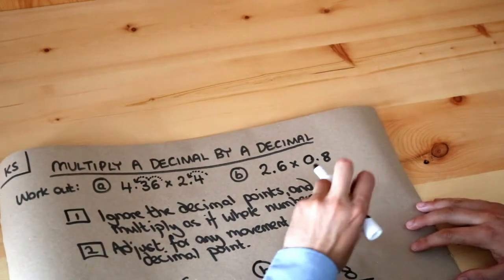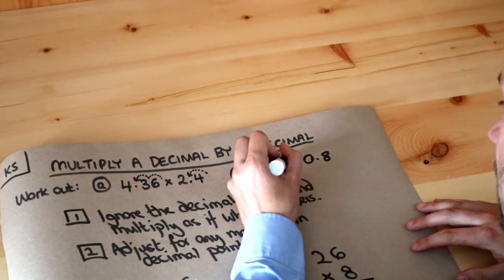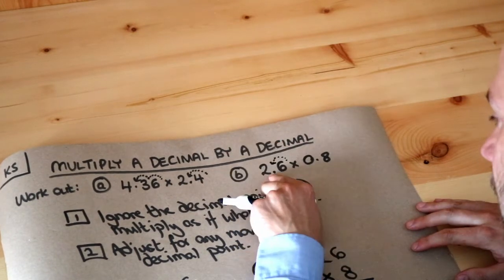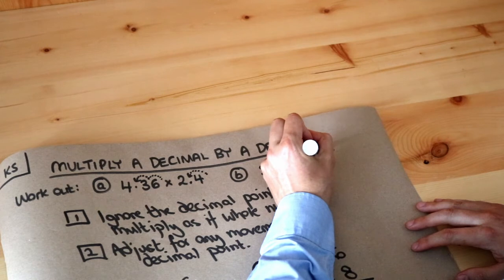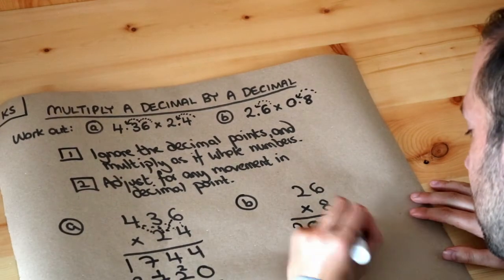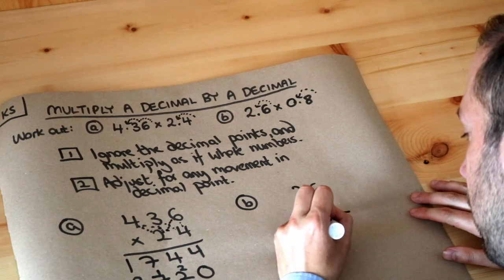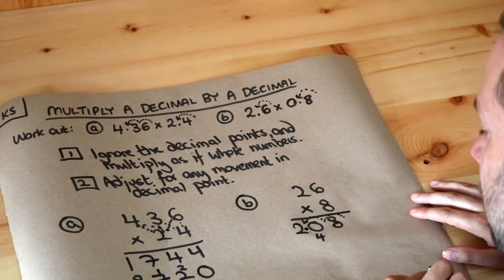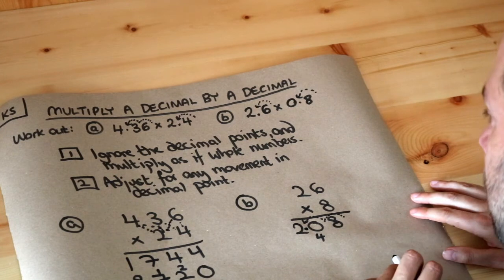Now, as before, we've got to count the decimal point jumps from the end. So that's one jump to get to there, and one jump to get to there. In total, that was two jumps. So from the end, we do two jumps: 1, 2. We have 2.08, so that is the final answer.